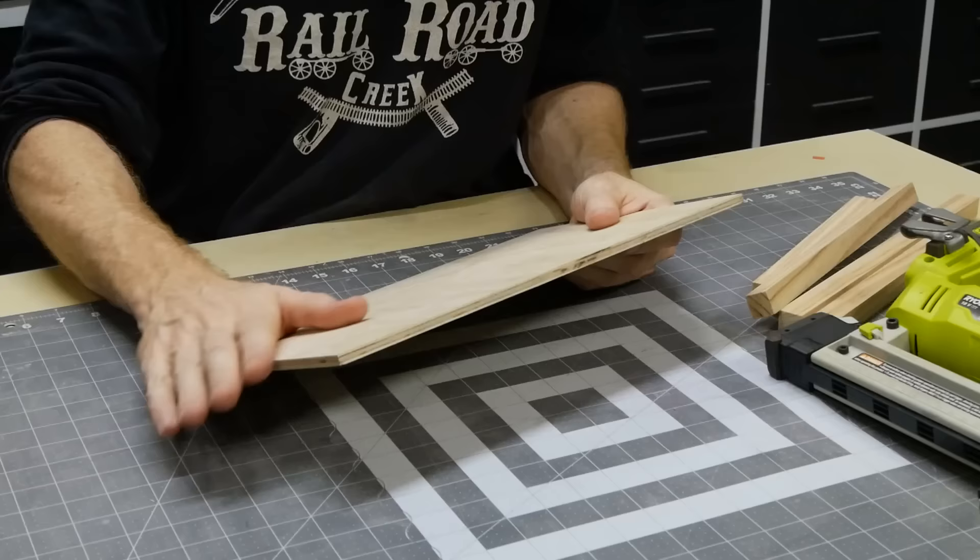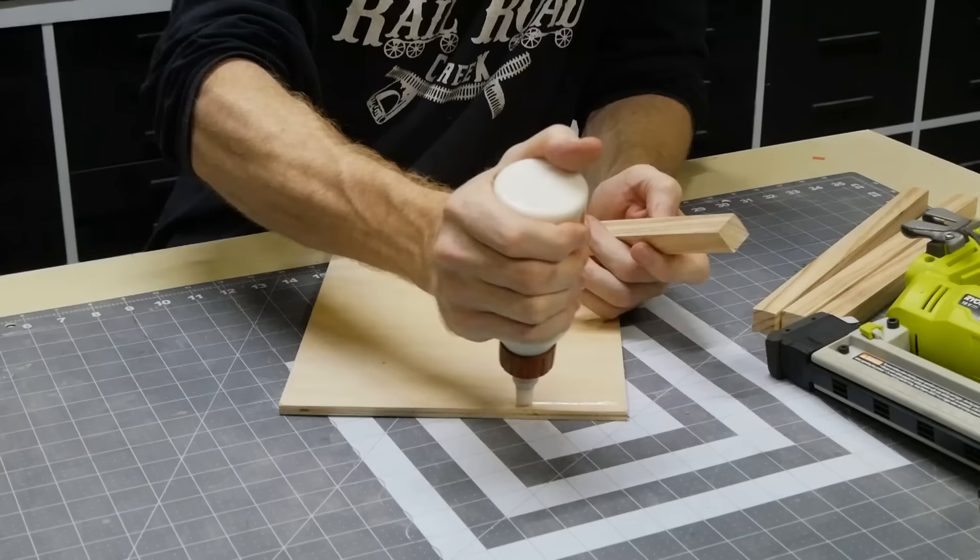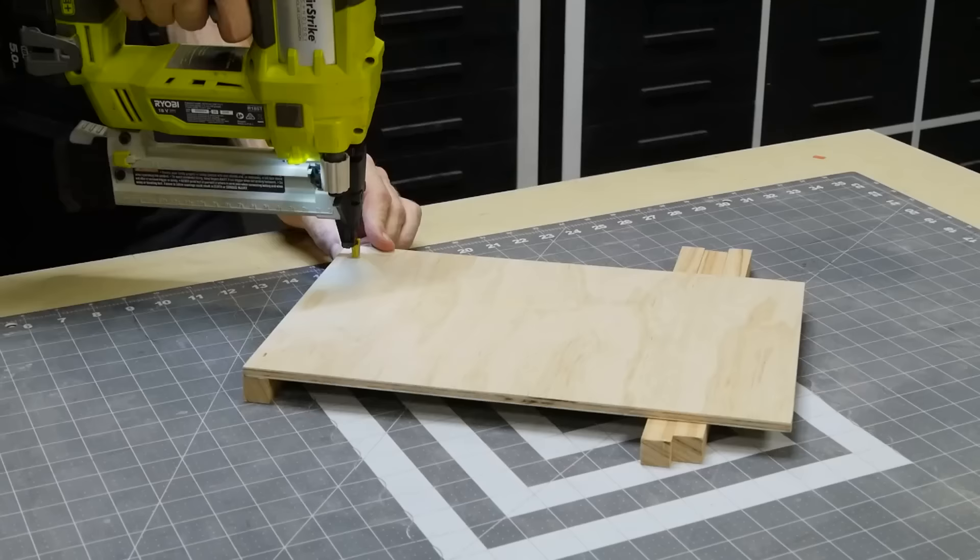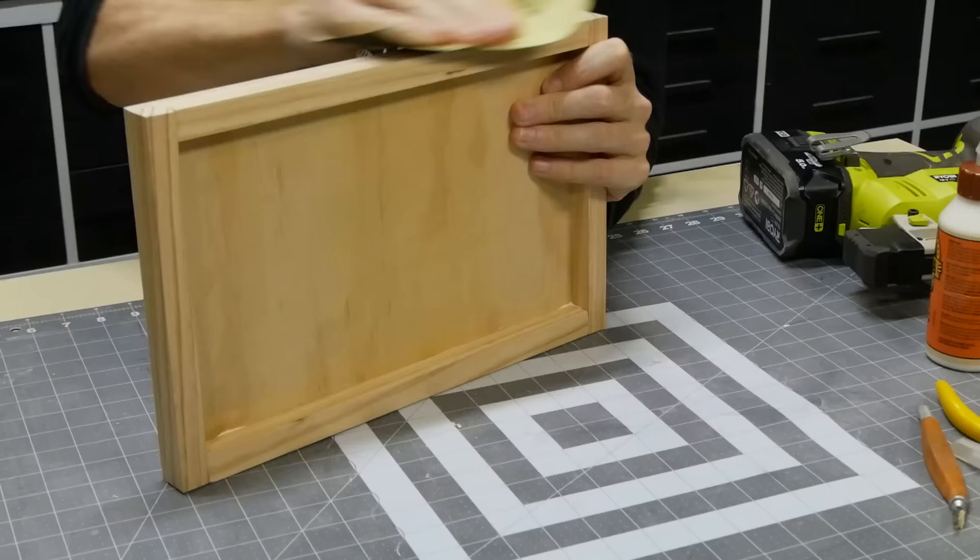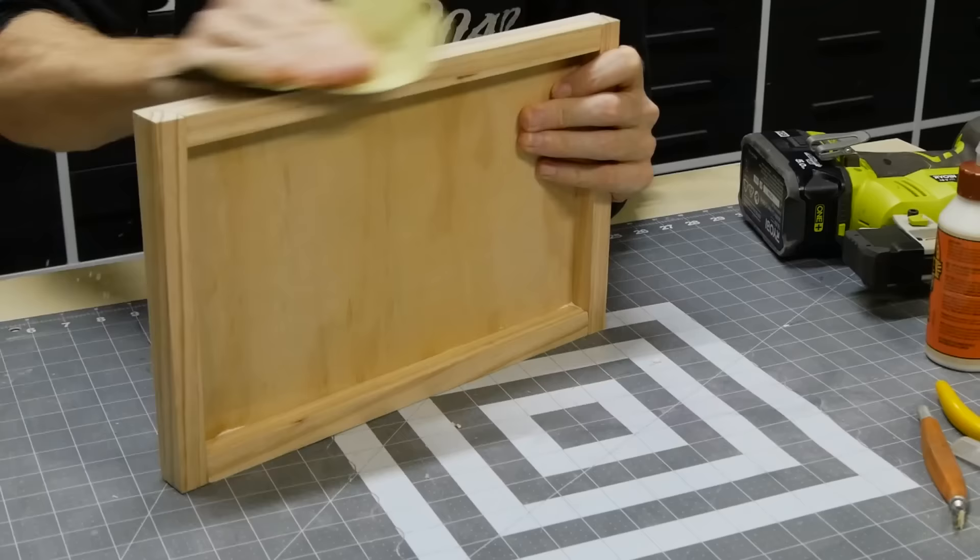Now for the rest of the diorama. I'm not going to spend too much time talking through this process. It's almost identical to how the Simpsons house diorama was built. I will talk through some of the changes though and some mistakes like using the wrong thickness plywood, but at least it was an easy fix.